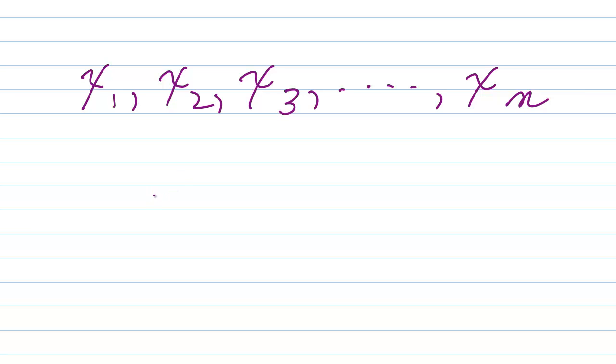What you do to find the geometric mean of those numbers is you just multiply them all up. x1, x2. I'm not a very good scribbler, am I? x2, x3.